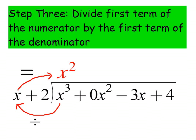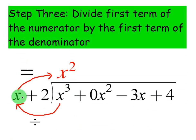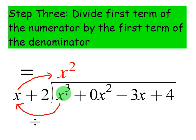Let me explain the third step. It's very routine-based. You're taking the first term inside the bar, which is x cubed, and dividing by the first term to the left of the bar — the denominator. So you're taking the first term inside divided by the first term outside, and putting the answer up top. In this case, x cubed divided by x gives you x squared, and you put that on top of the bar.